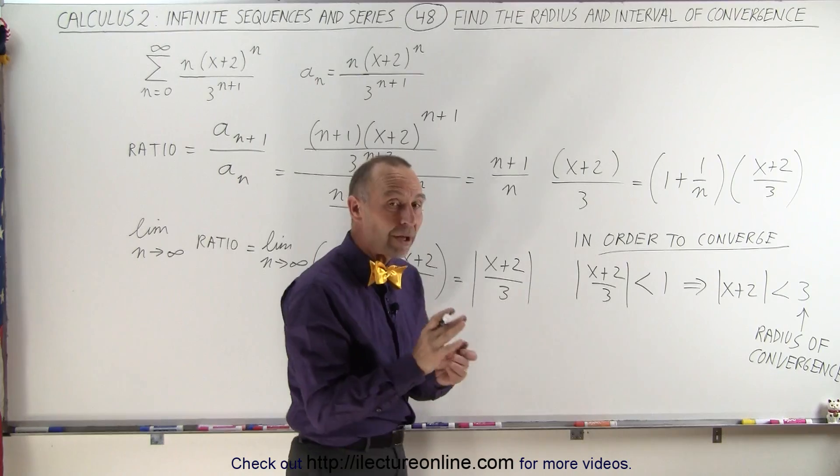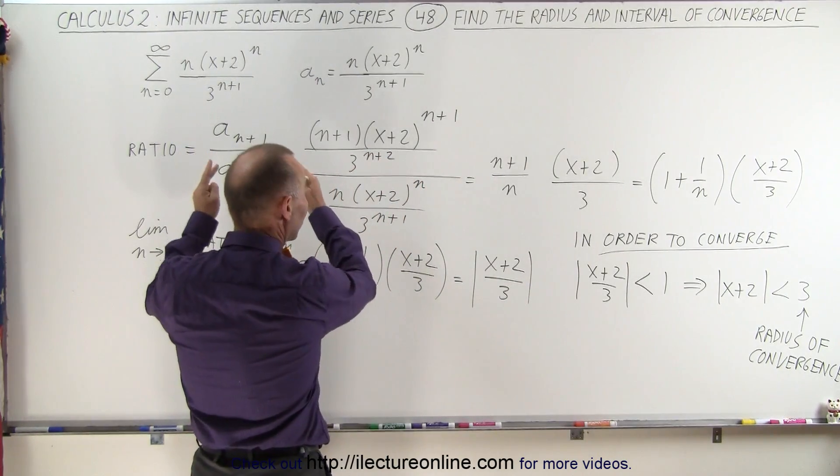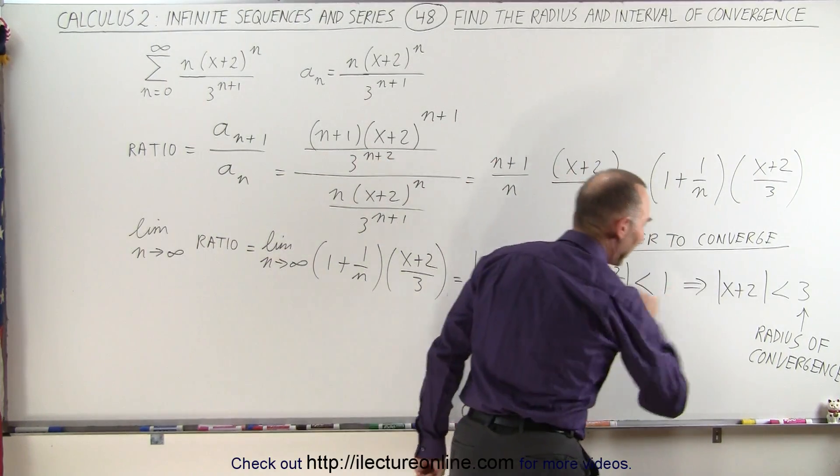Now we are going to solve for all the possible values that x can be in such a way that the infinite series still converges. The requirement then can be found by solving this for x.